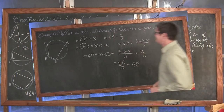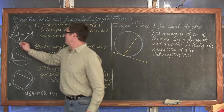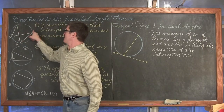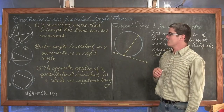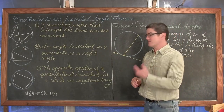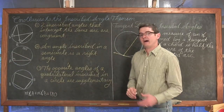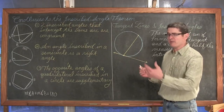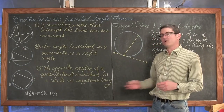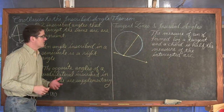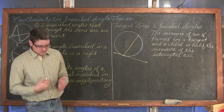Here are the three corollaries. First: two inscribed angles that intercept the same arc are congruent — if both intercept a 100-degree arc, both angles are 50 degrees. Second: an angle inscribed in a semicircle is a right angle — if the arc is 180 degrees, the inscribed angle is 90 degrees, and you'll likely use the Pythagorean Theorem. Third: the opposite angles of a quadrilateral inscribed in a circle are supplementary, which we just proved.